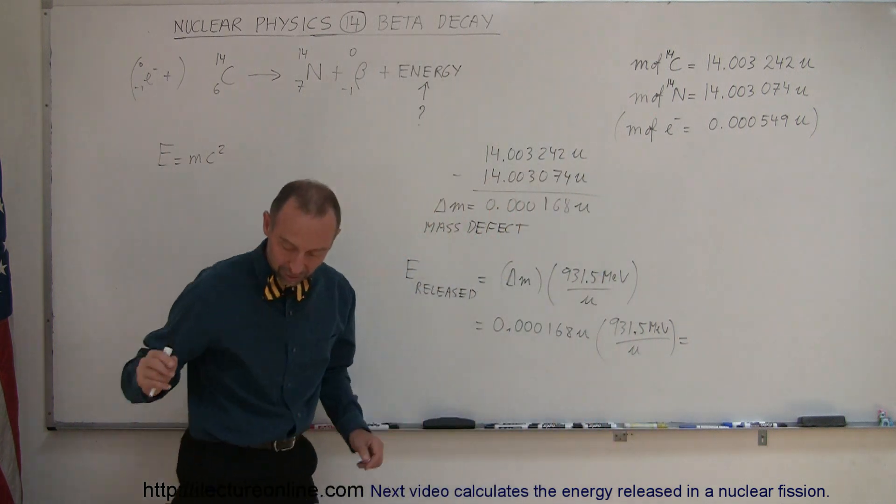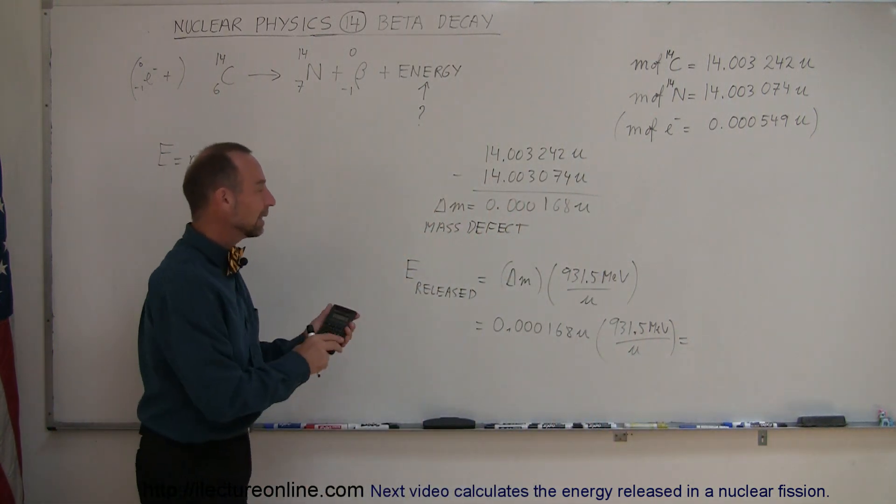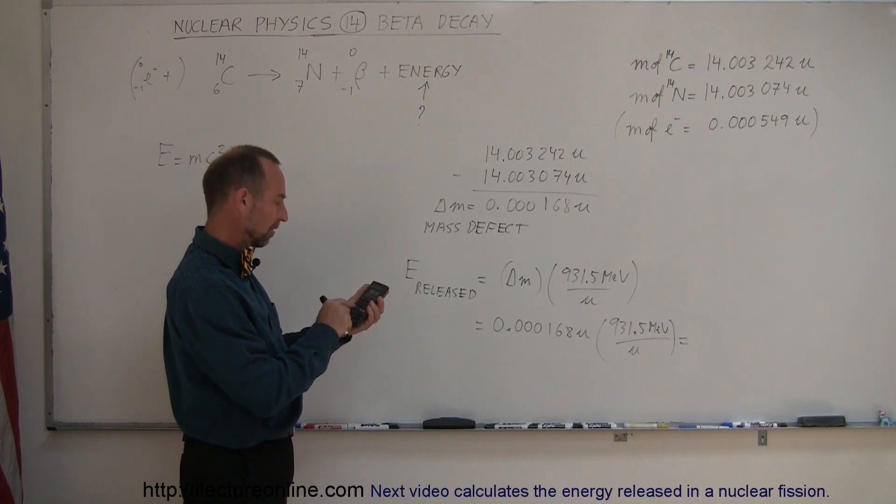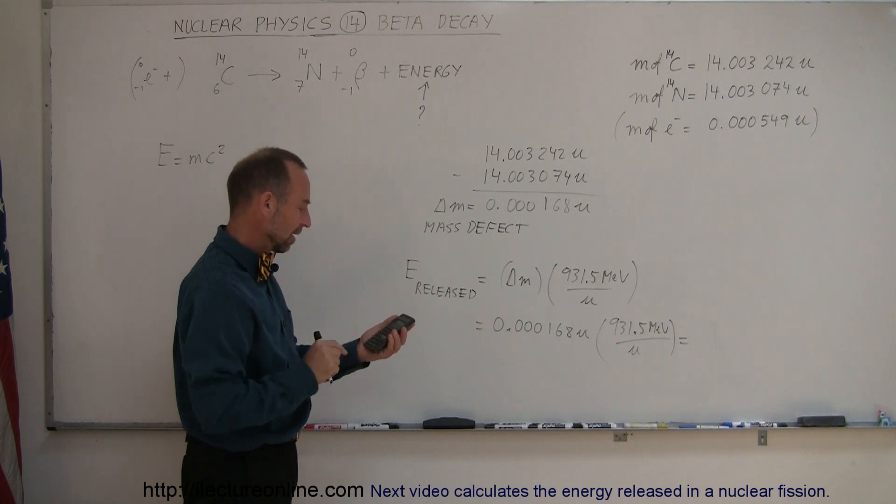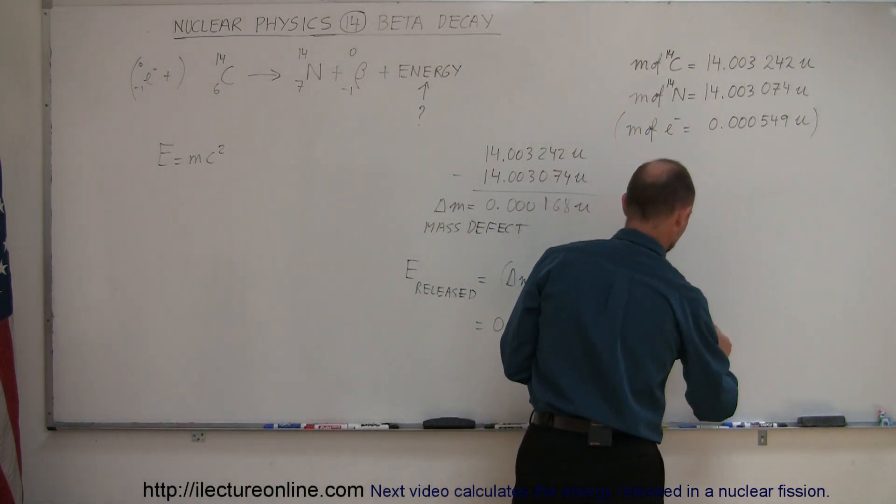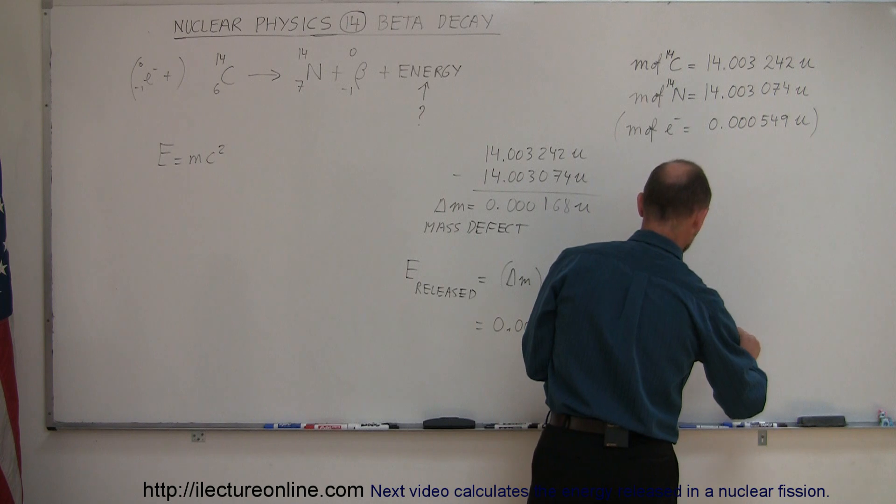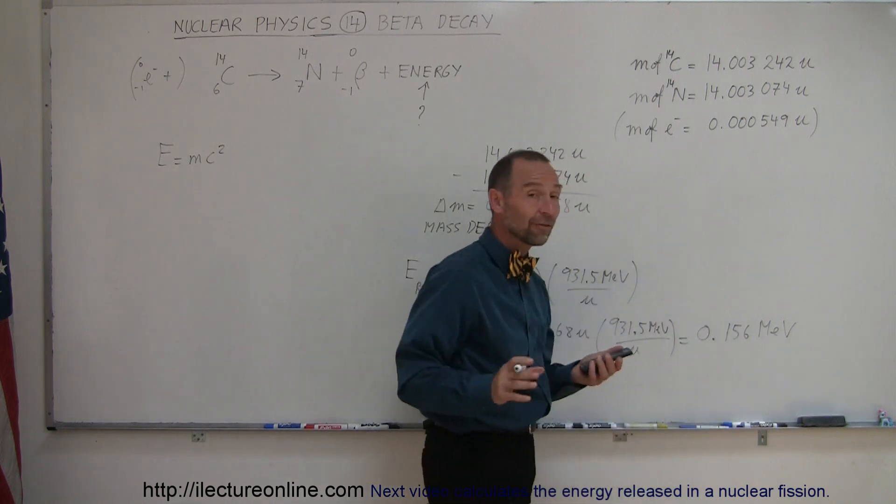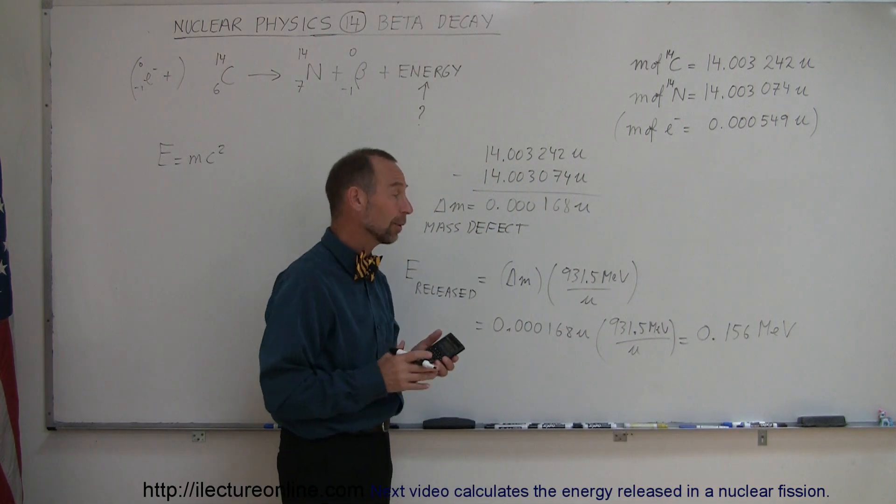Let's see how much energy is released in a single beta decay reaction like that. We have 0.000168 times 931.5, and this is equal to 0.156 MeV, or million electron volts, or 156 keV, or kilo electron volts.